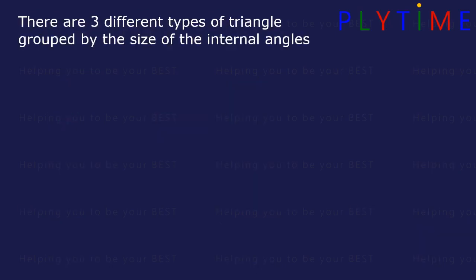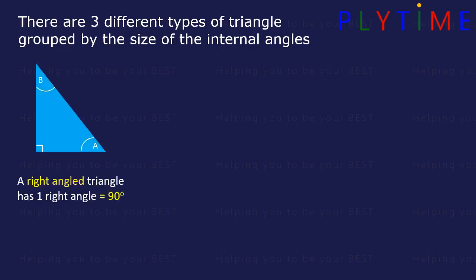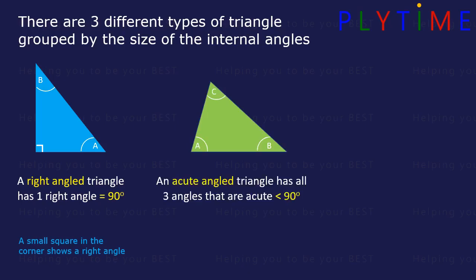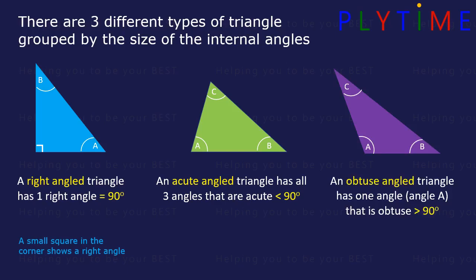There are three different types of triangle grouped by the size of the internal angles. First, there's a right angle triangle and this has one right angle that is 90 degrees — the small square in the corner shows that it's a right angle. An acute angle triangle has all three angles that are acute, or less than 90 degrees. And an obtuse angle triangle has one angle — here it's angle A — that is obtuse, or more than 90 degrees.